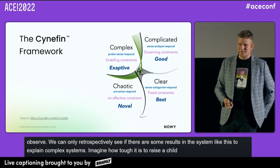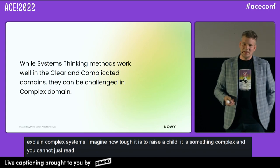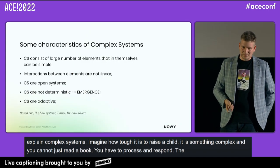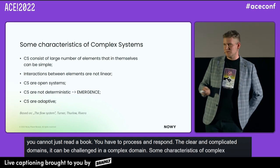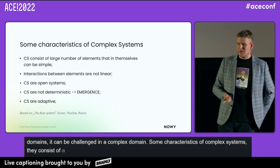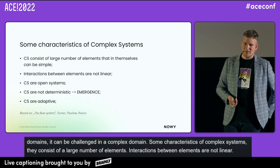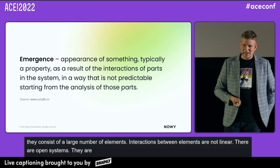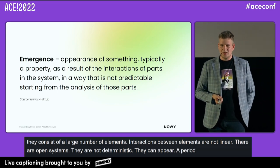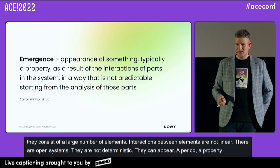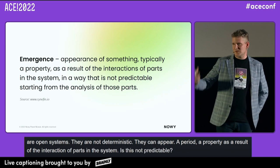To explain a complex system, imagine how tough it is to raise a child — being a parent is something you can't have a book about. It's very complex. You have to probe, sense, and respond. While systems thinking methods work well in the clear and complicated — ordered — domain, they can be challenged in the complex domain. Some characteristics of complex systems: they consist of a large number of elements; interactions between elements are non-linear; they are open systems; they are not deterministic. The phenomenon of emergence can appear.